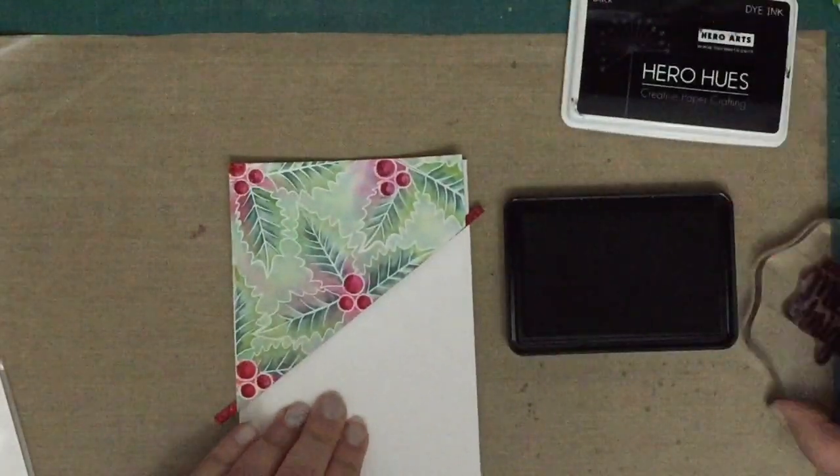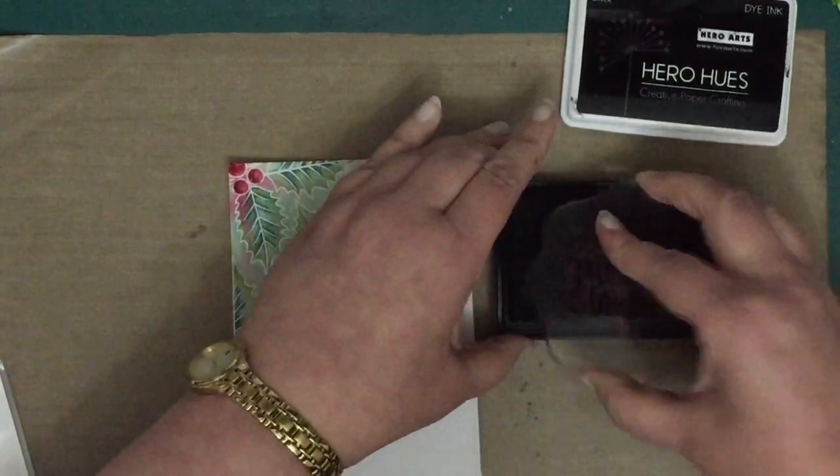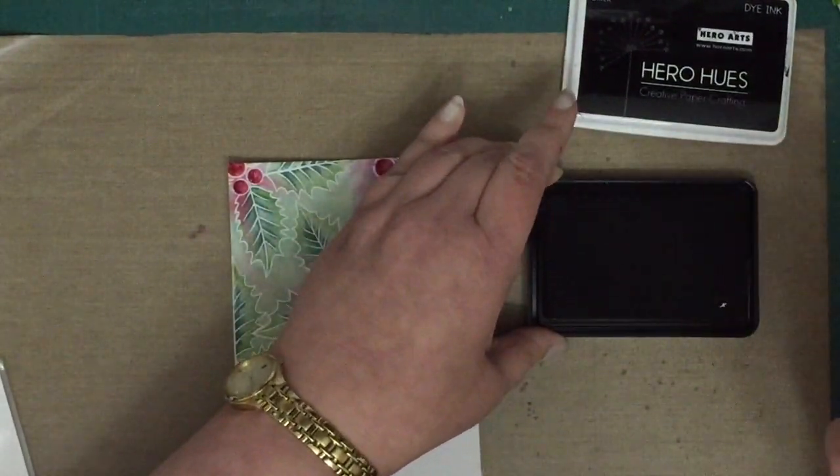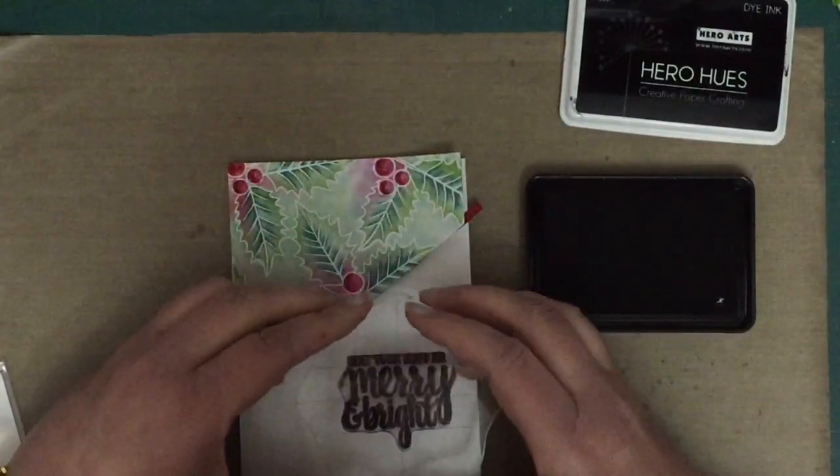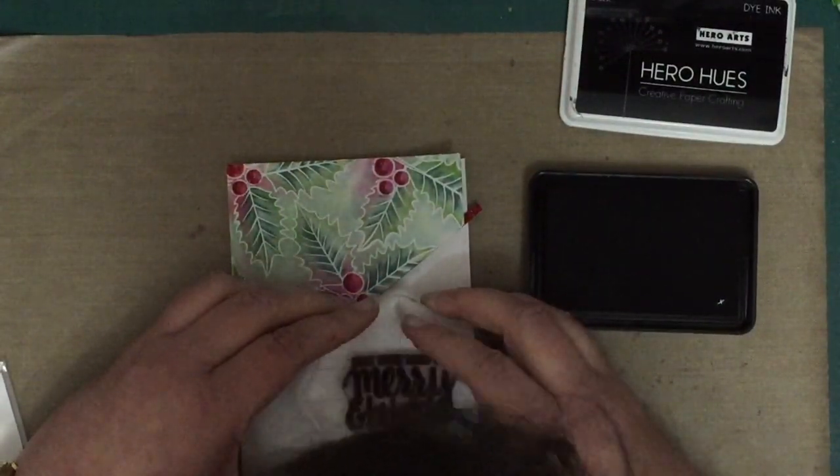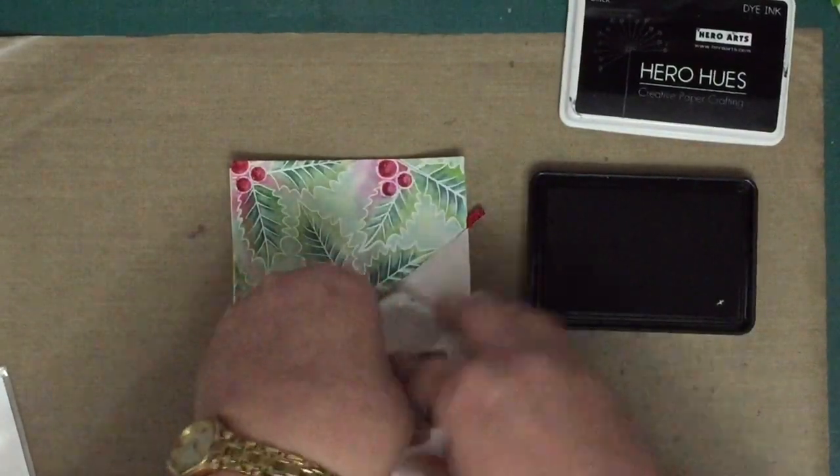A Hero Arts stamp with Hero Hues black ink, which gives a nice crisp image for sentiments, which is always good for sentiments being able to read them really, really clearly. And again, my head gets in the way. Sorry about that.